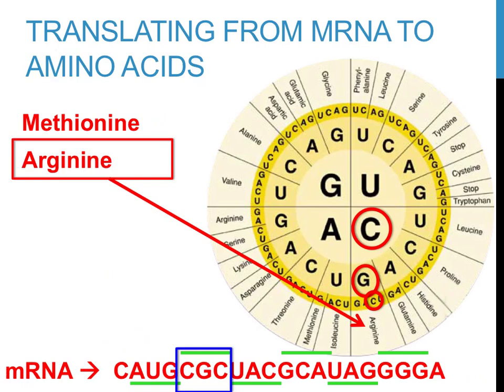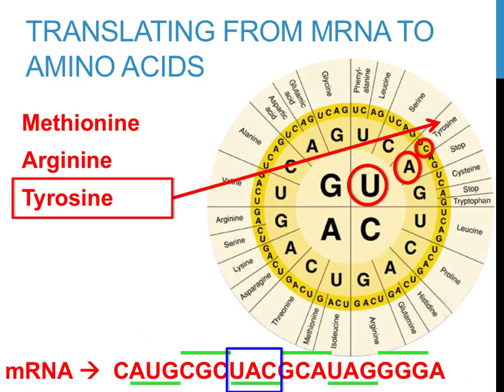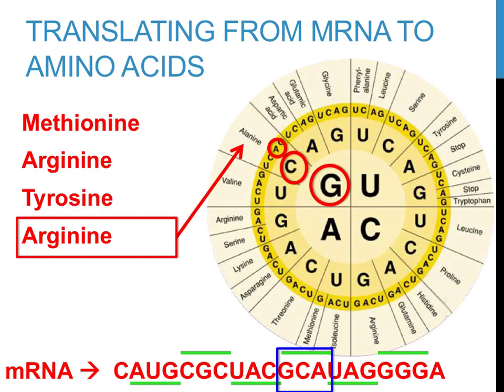The second codon in this sequence is CGC. Using the codon chart provided on this slide, you can see that arginine would be produced. The third codon is UAC, which codes for tyrosine. The fourth codon is CGC again — arginine is being coded for using a completely different three-letter sequence. There are 64, or 4 × 4 × 4, different possibilities for combinations of G, A, C, and U, but only about 20 amino acids coded for in humans. There is a good deal of redundancy in this form of genetic coding.